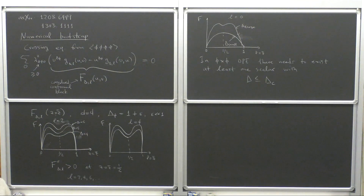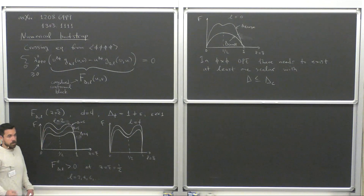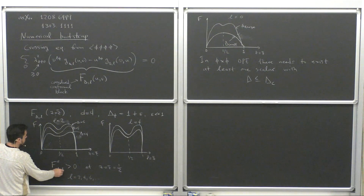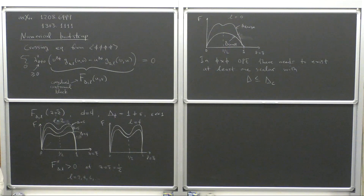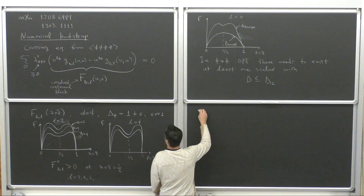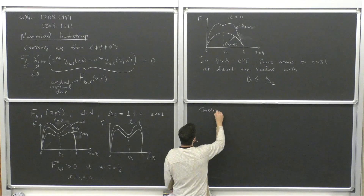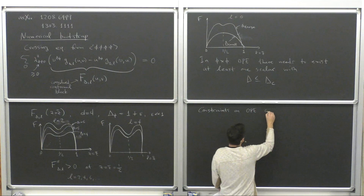This was just a very simple way to motivate that a bound exists. What you then do is say — instead of looking at the second derivatives, I could be looking at more sophisticated functionals, because here I took the second derivative evaluated at the point one-half, but I could look at more complicated functionals. Maybe this will allow me to get more constraints. So let's see how we use this logic to get constraints on OPE coefficients.